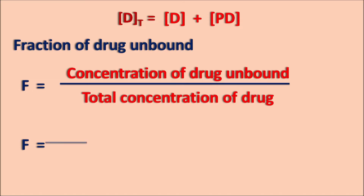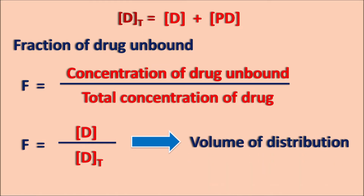The fraction of drug unbound F is equal to D divided by Dt, where D is the free drug concentration and Dt is the total drug concentration. This fraction indicates how much of the drug is available as a free form compared with the total concentration of the drug, and which is available to show its therapeutic action. This fraction also indicates the volume of distribution of the drug. If the drug has a high concentration of the unbound form, then this fraction is very high, thereby the volume of distribution is also very high. Higher volume of distribution indicates that the drug is not binding to the plasma proteins and is more distributed into the body, so extravascular distribution will be more when the drug has less binding with the proteins.